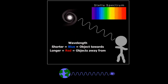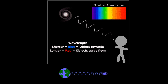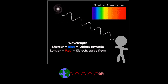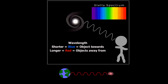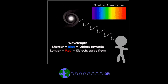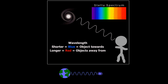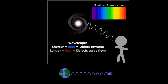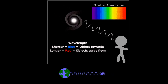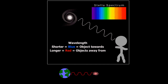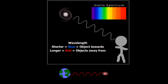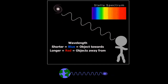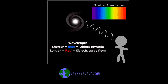The Doppler effect can also be seen with light. Objects moving away have a slightly red-shifted wavelength, and those moving towards you have a slightly blue-shifted wavelength. That's how Edward Hubble found out that the galaxies were moving away from us, giving birth to the Big Bang Theory.